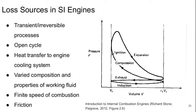It's an open cycle — we're taking in new gas and expelling old gas each cycle. There's heat transfer to the engine cooling system. The composition and properties of the working fluid are not constant throughout the cycle. And the combustion is something that happens at finite speed, which we'll talk about in the next lecture. And also, of course, friction.